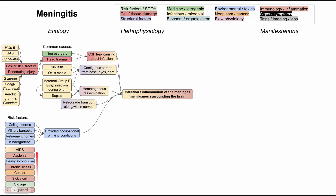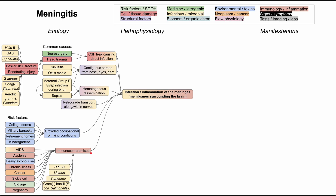Other risk factors all cause the patient to be immunocompromised. HIV-AIDS starts as an infectious etiology but ends up causing an immunological deficit. Asplenia, heavy alcohol use disorder, chronic illnesses, cancer, sickle cell, old age, and pregnancy are all immunocompromised states. There are well-established bacteria you're more predisposed to when immunocompromised, including Haemophilus influenzae type B, Listeria, Strep pneumo, and gram-negative bacilli including E. coli and Salmonella.